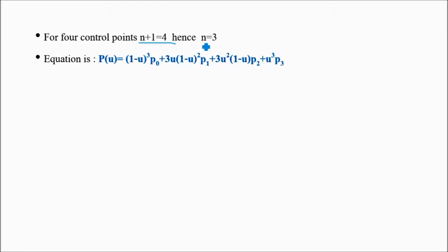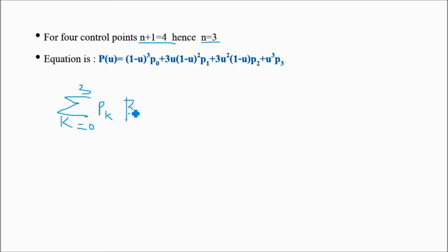We will solve this equation for four control points. For four control points, n plus one equals four, hence n equals three. So the summation will start from k equals zero to three, where p(k) represents the control points and the Bezier blending function is Bezier(k,3) of u.